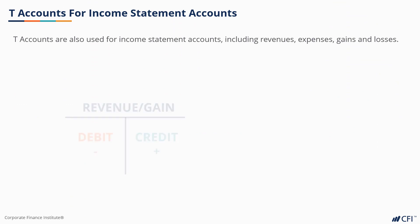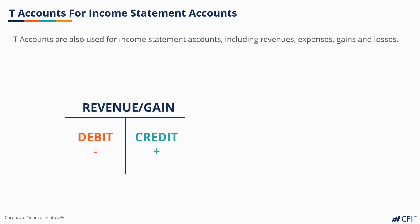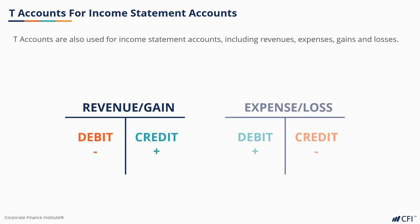Revenues are recorded as a debit if they decrease in value and a credit if they increase in value. On the expenses side, it's the opposite — a debit is an increase and a credit is a decrease.